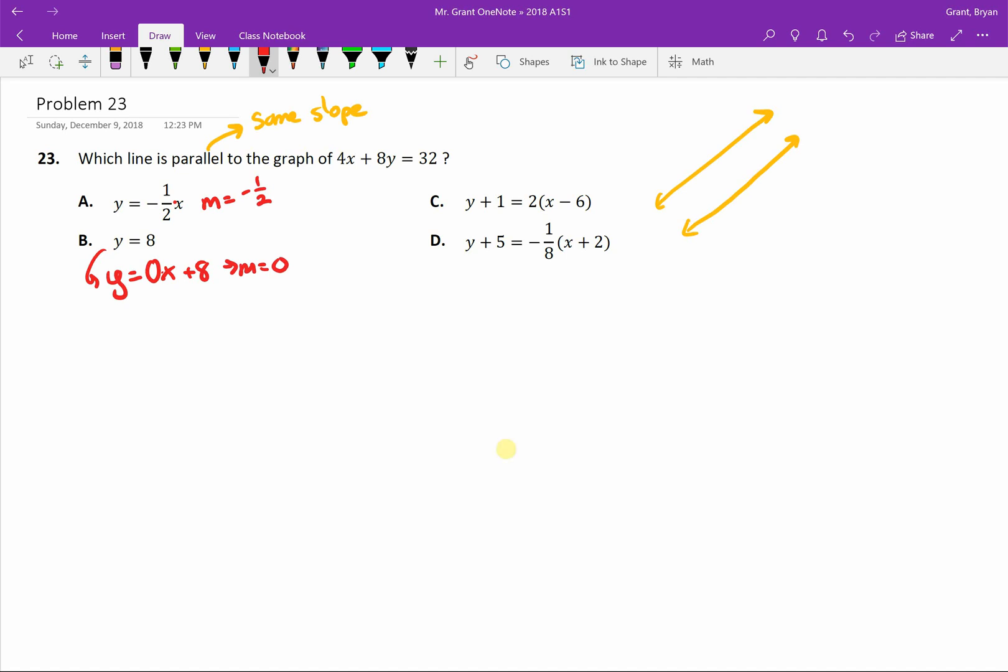C and D looks scary but the number multiplying by x should be apparent. Two is multiplying by x here so that's our slope. And negative one-eighth is multiplying by x here and we also have our slope. So at this point I see all four slopes they're all different.